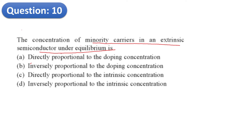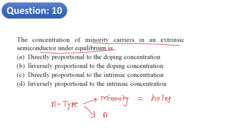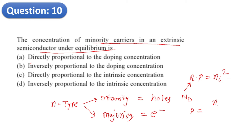Question 10: The concentration of minority carriers in an extrinsic semiconductor. For example, in an n-type semiconductor, minority carriers are holes and majority carriers are electrons. Using the mass action law: n times p equals ni squared. Since n equals the donor concentration Nd, minority carrier concentration equals ni squared divided by Nd. This is inversely proportional to the doping concentration. Option B is correct.